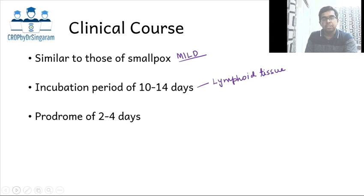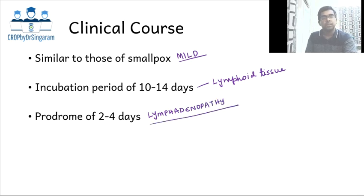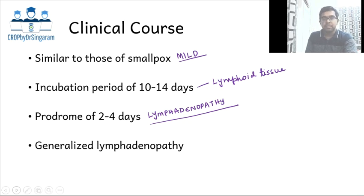During the initial prodrome of two to four days, common features include fever, malaise, headache, and body ache. Along with that, lymphadenopathy is also noted. This is a very important feature because lymphadenopathy is usually not seen with smallpox but is a characteristic feature of monkeypox, and this lymphadenopathy is usually a generalized form.